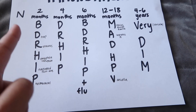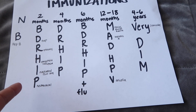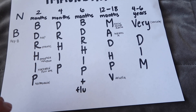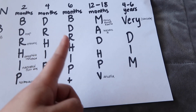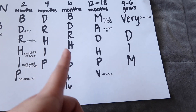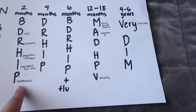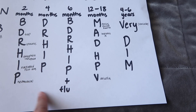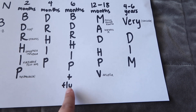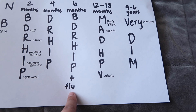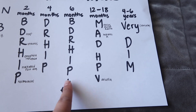When we move on to four months, it's the exact same as two months except you drop the Hepatitis B. Then at six months, it's the exact same as two months plus the flu vaccine. After six months, you'll start getting the flu vaccine annually.